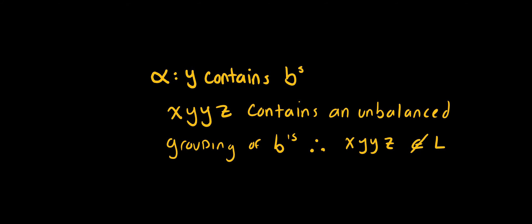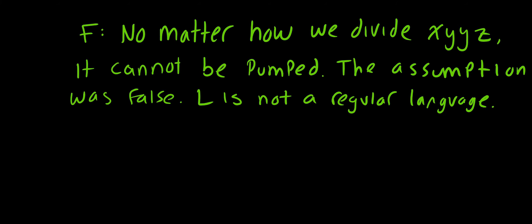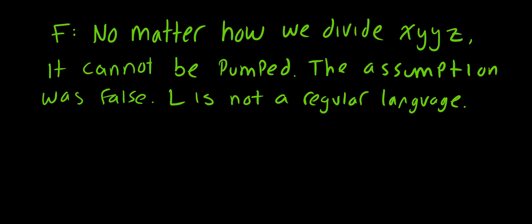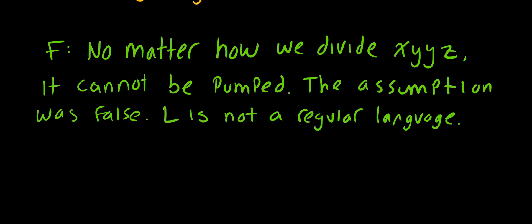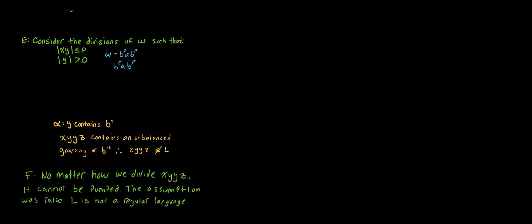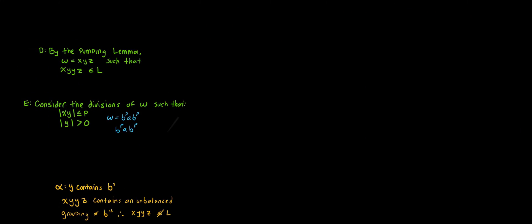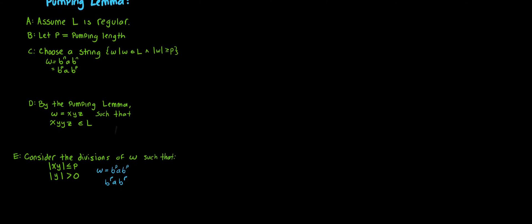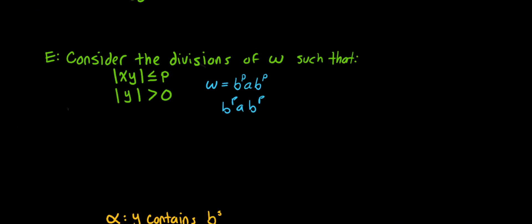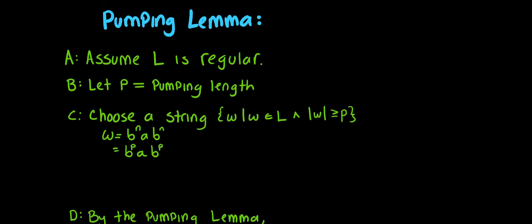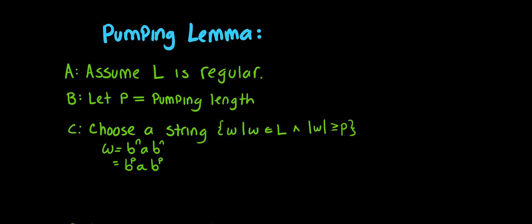And so the last part of our proof is the conclusion. And the conclusion will be something like this: No matter how we divide XYZ, it cannot be pumped. The assumption was false. L is not a regular language. So this whole thing, let me zoom out so you can see it. This whole thing, A until F, is the pumping lemma. And it's really important that we show each step of this proof when we use the pumping lemma.